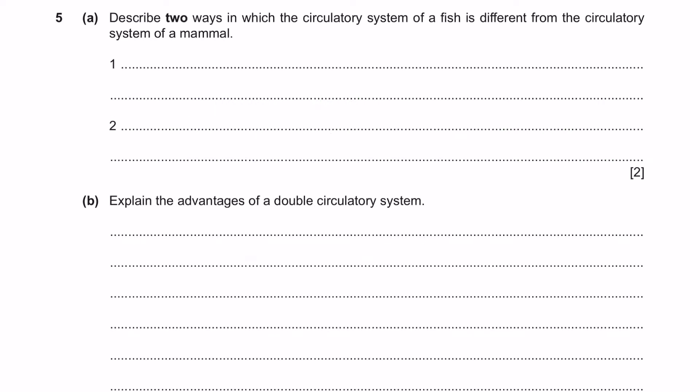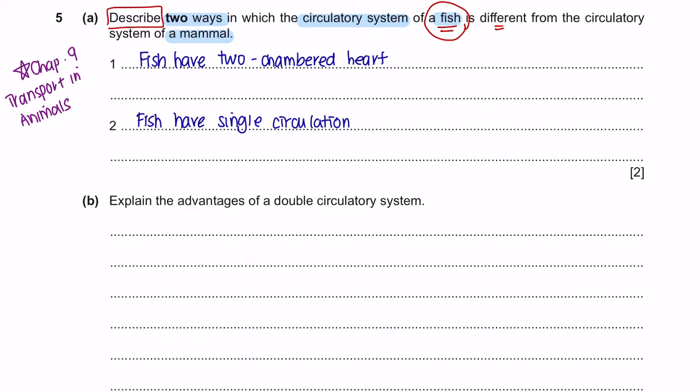Question 5 Part E. Describe two ways in which the circulatory system of a fish is different from the circulatory system of a mammal. This is a question from Chapter 9, Transport in Animals. In the circulatory system of fish, it has a two-chambered heart compared to mammals which have a four-chambered heart. You are only required to describe how the fish is different. The second difference is that in fish, the circulatory system is single circulation whereas in mammals, it's double circulation. Single circulation means that for every one circuit of the body, the blood passes through the heart once, unlike mammals where the blood passes through the heart twice.